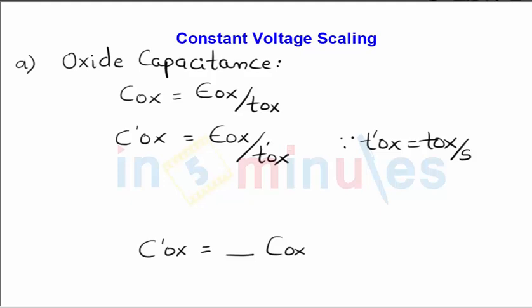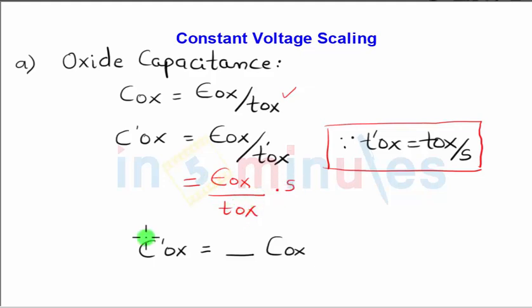We know that oxide capacitance is given by COx equals the permittivity of the oxide divided by the oxide thickness. In constant voltage scaling, TOx is scaled down by a factor of s. Since we've already derived this in detail in constant field scaling, permittivity upon TOx divided by s moves s to the numerator. Thus, the oxide capacitance in constant voltage scaling increases by a factor of s.